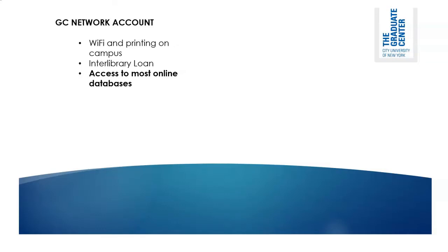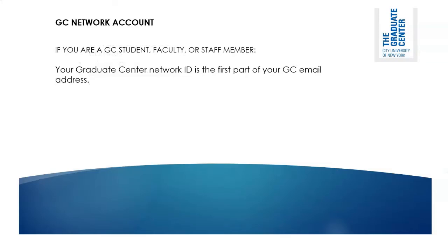So what is that network ID? If you're a GC affiliate, it'll be the first part of your GC email address — you chop off gradcenter or gc.cuny.edu. It's most likely your first initial and your last name.